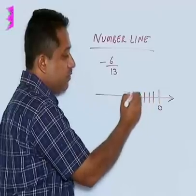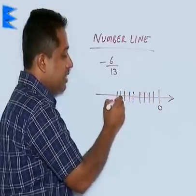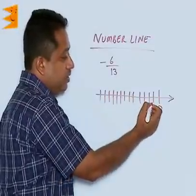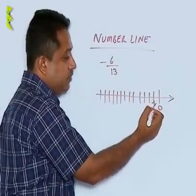So, we have 1, 2, 3, 4, 5, 6, 7, 8, 9, 10, 11, 12 and 13. So, we have 13 parts and here the first part is going to be minus 1 upon 13.